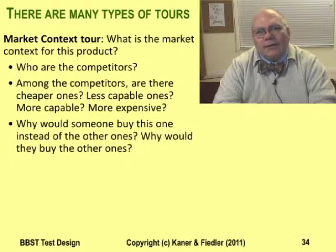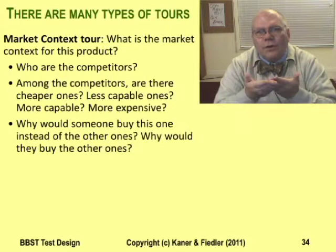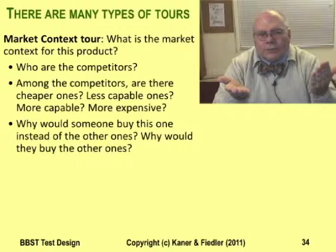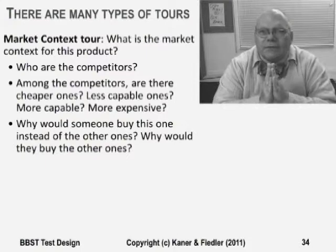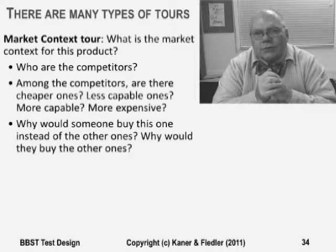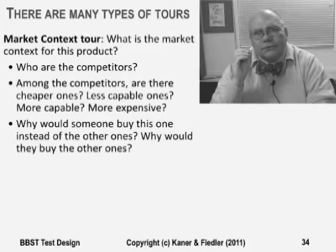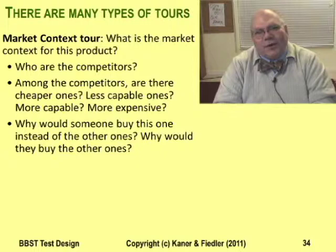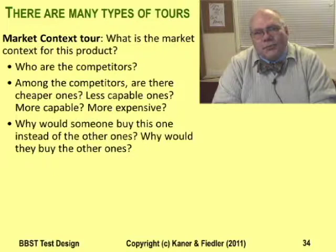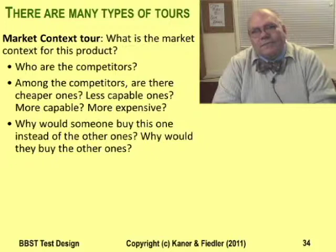A market context tour uses many of the same sources of information as a benefits tour, but helps you understand the place of your product within its market. What products could people use instead of yours? Why would they use yours? What makes your product special? Marketing folks use the term unique selling proposition to refer to the special characteristics of a product. Understanding your product's differentiators and those of your competitors can help you prioritize tests, select interesting test data, and make powerful arguments that certain bugs must be fixed or they'll have a market impact. Even for products developed for in-house use, there's still a market context — users will compare your program to others they know, and if it's inferior, those users will eventually rebel.